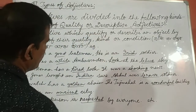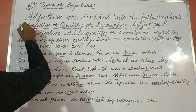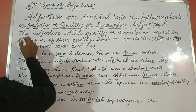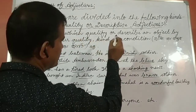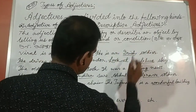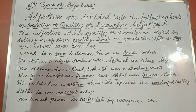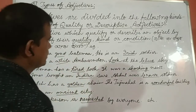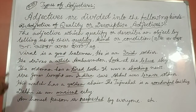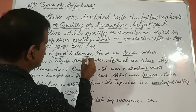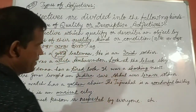Adjective of quality, or descriptive adjectives. Definition: these are the adjectives which qualify or describe an object by telling us of their quality, kind, or condition. That type of adjective is called adjective of quality or descriptive adjective. The adjective words of quality include good and bad, and good land.